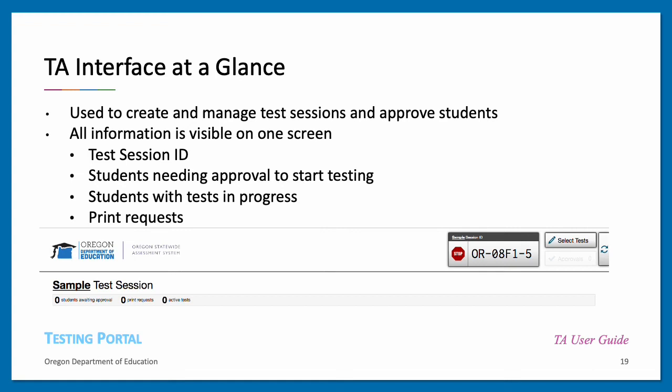In order to administer a test session, test administrators must access the TA interface through the test administration option on the OSAS portal landing page. The following is a sample screenshot of an active test session. It is through this interface that TAs can locate and view the test session ID, identify which students need approval to begin testing in the session, identify which students currently have a test in progress, and identify which students have submitted a print request.